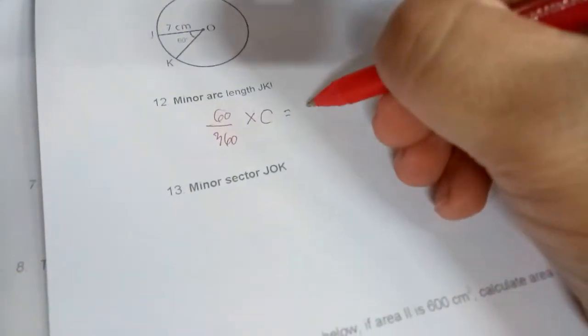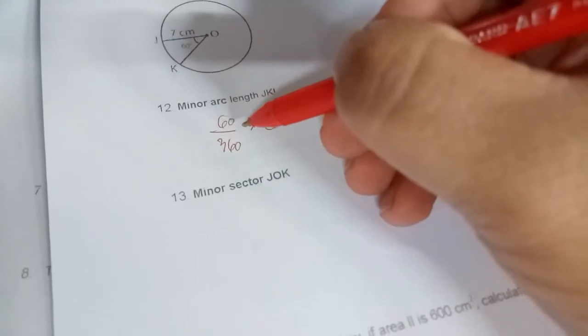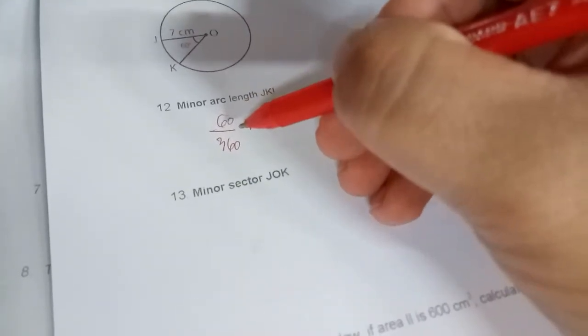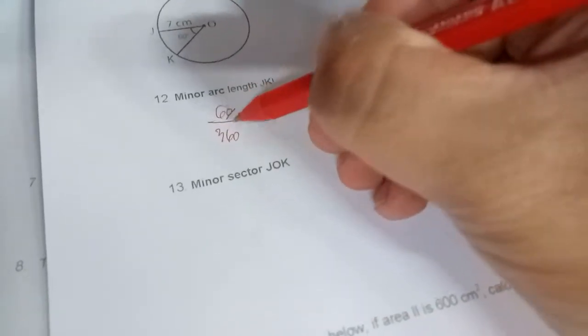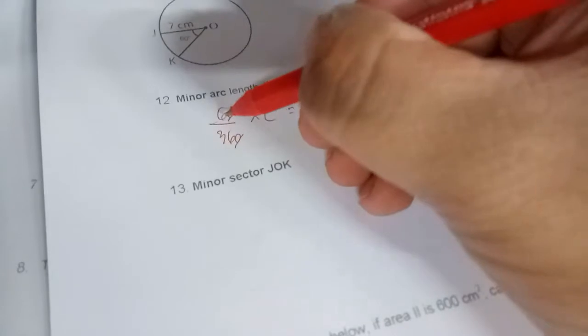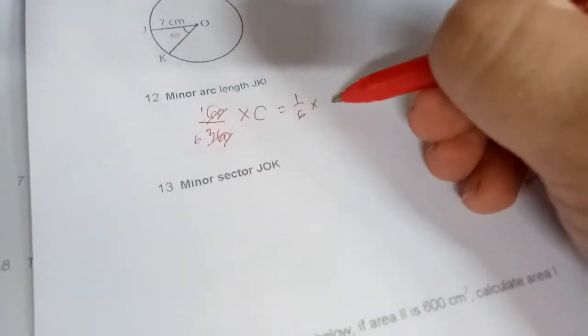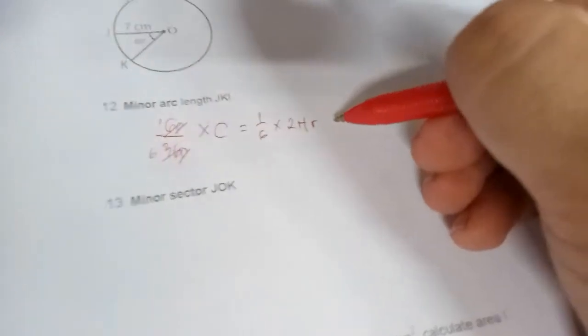Before we do that, an easier way to solve this is to simplify the fraction. When you want to simplify fractions, if you have zeros you can cancel them, and 6 and 36 can be cancelled to 1 over 6. So it's the same as 1/6 times the circumference. I'm going to use 2πR.